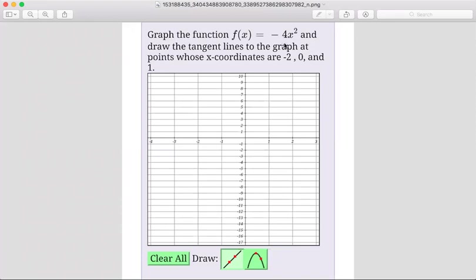Alrighty, so I'm going to do a new homework help problem today that's in a little bit of a different format because I had a student send me the problem of graph the function f of x is equal to negative 4x squared and draw the tangent lines to the graph at the points whose x coordinates are negative 2, 0, and 1.